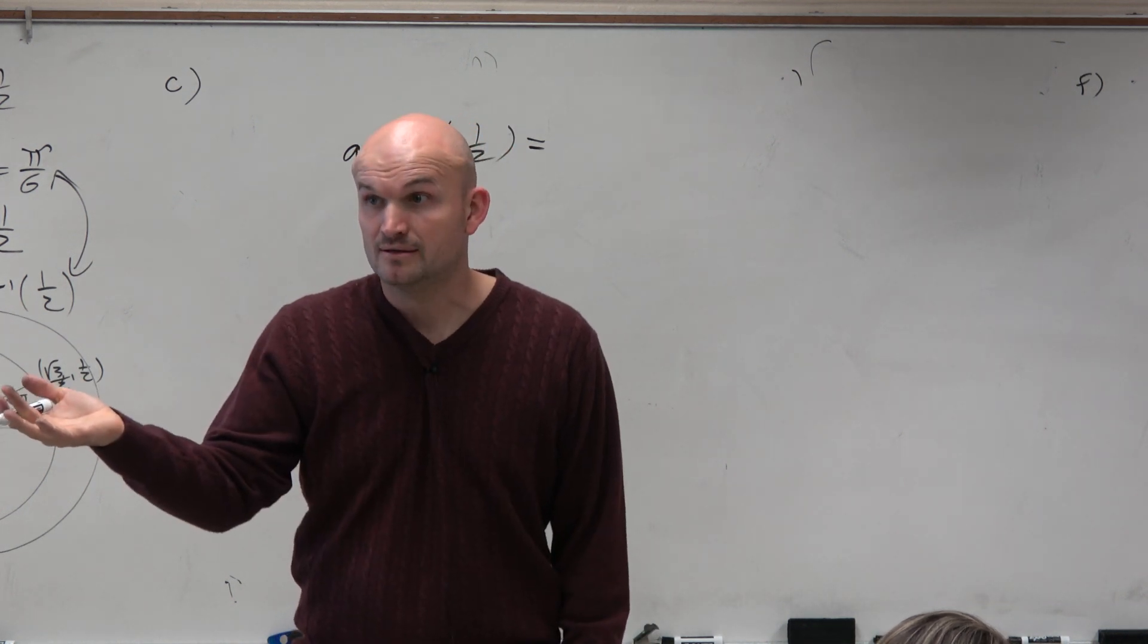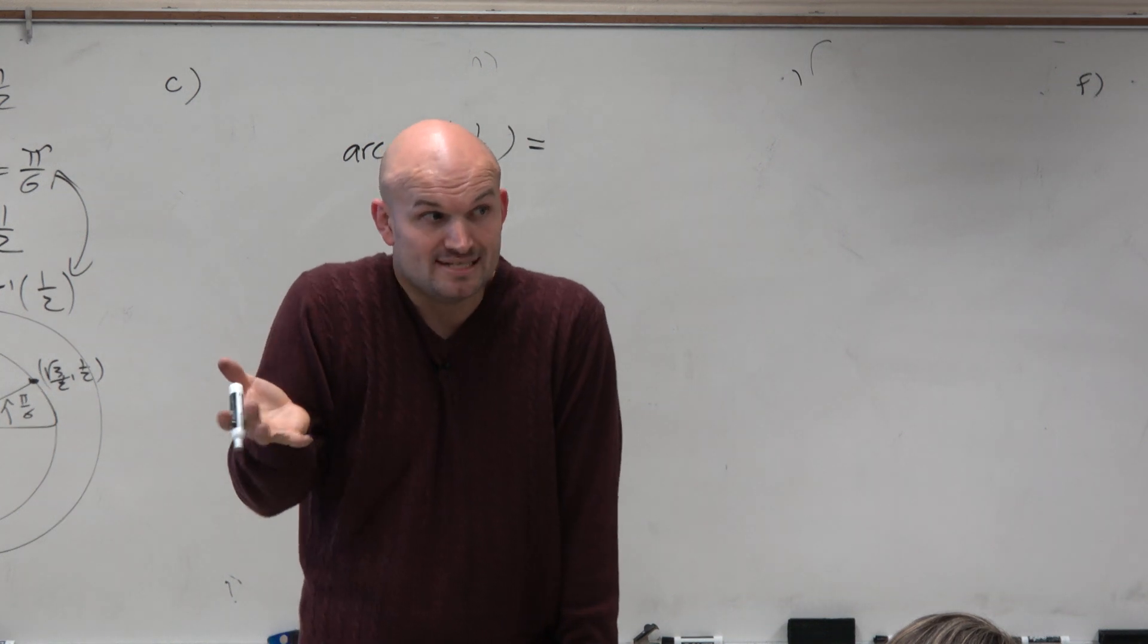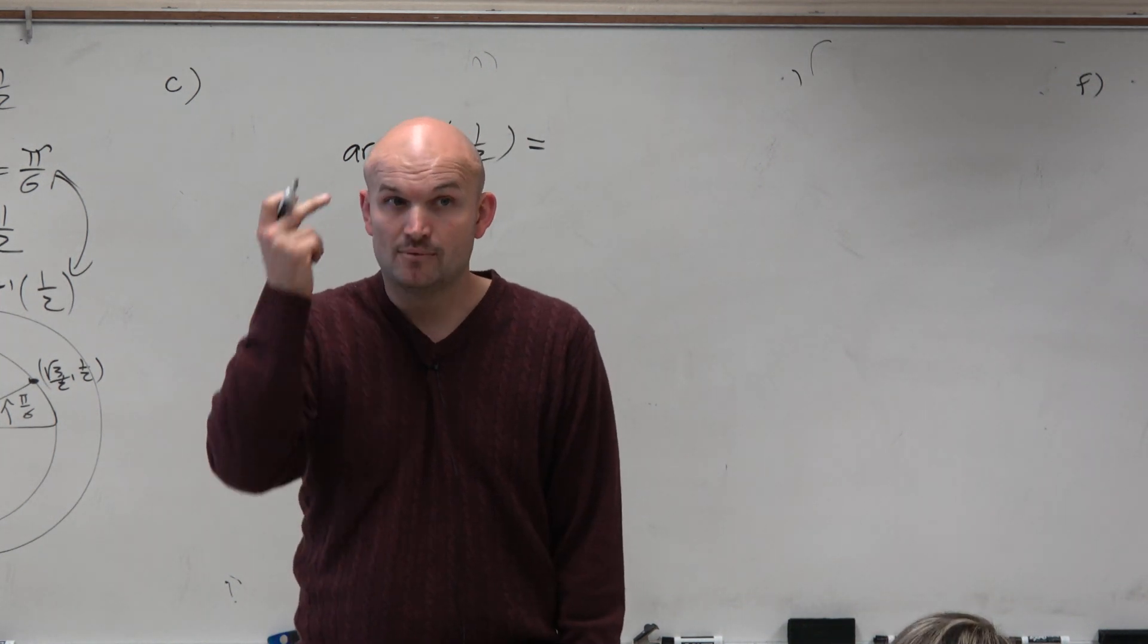We're looking for an angle though, right? So we're looking for the cosine of what angle is equal to negative 1 half. So again, we have to know the unit circle.